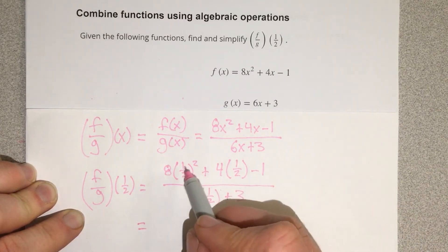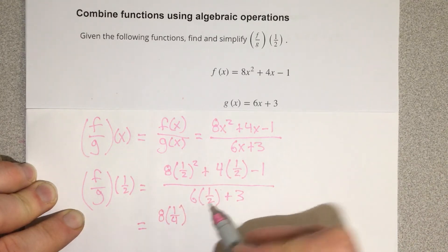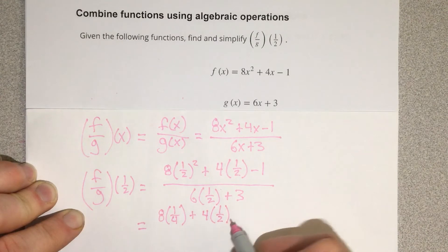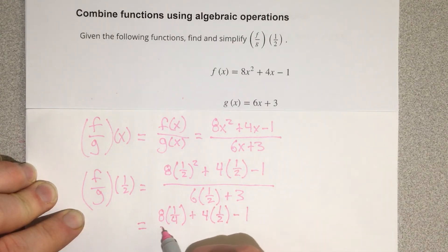Let's go ahead and take one-half squared. That's a fourth, so we have 8 times one-fourth plus 4 times one-half minus 1 over...